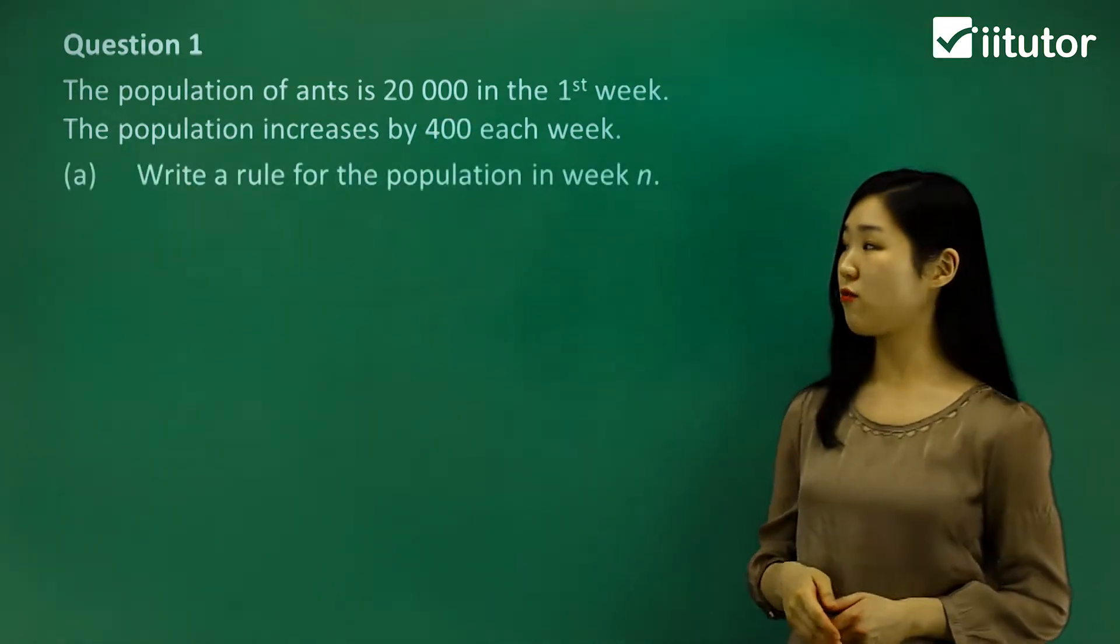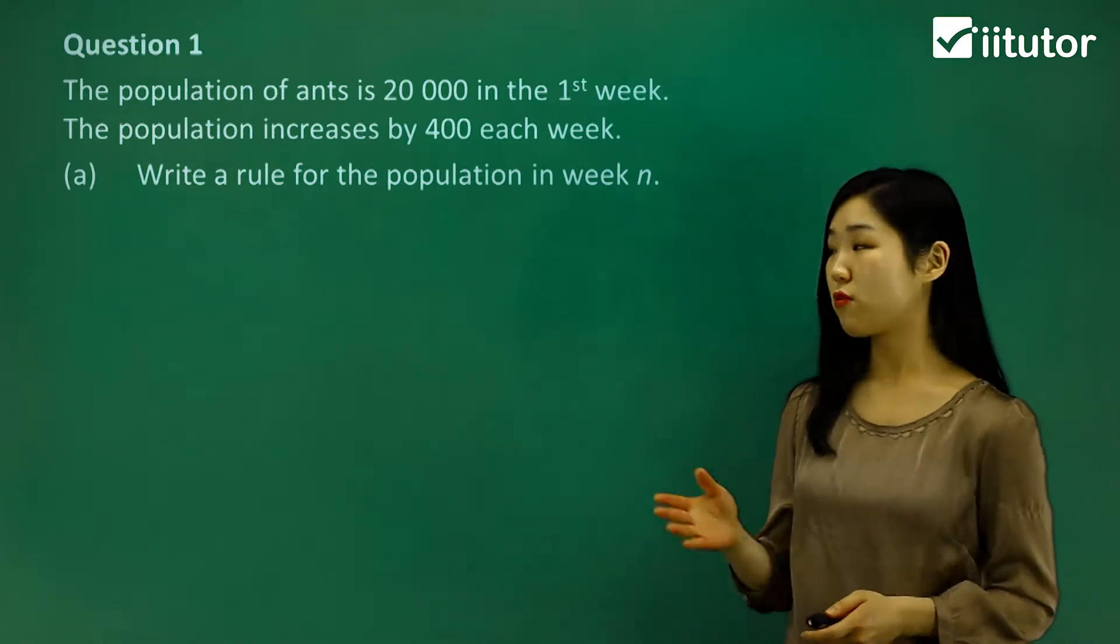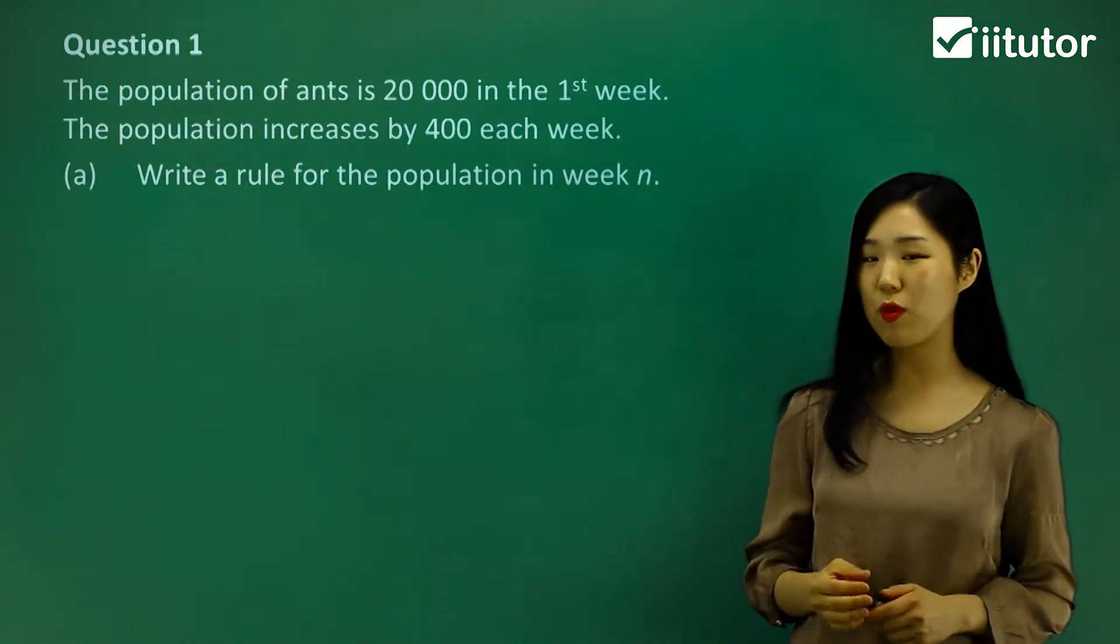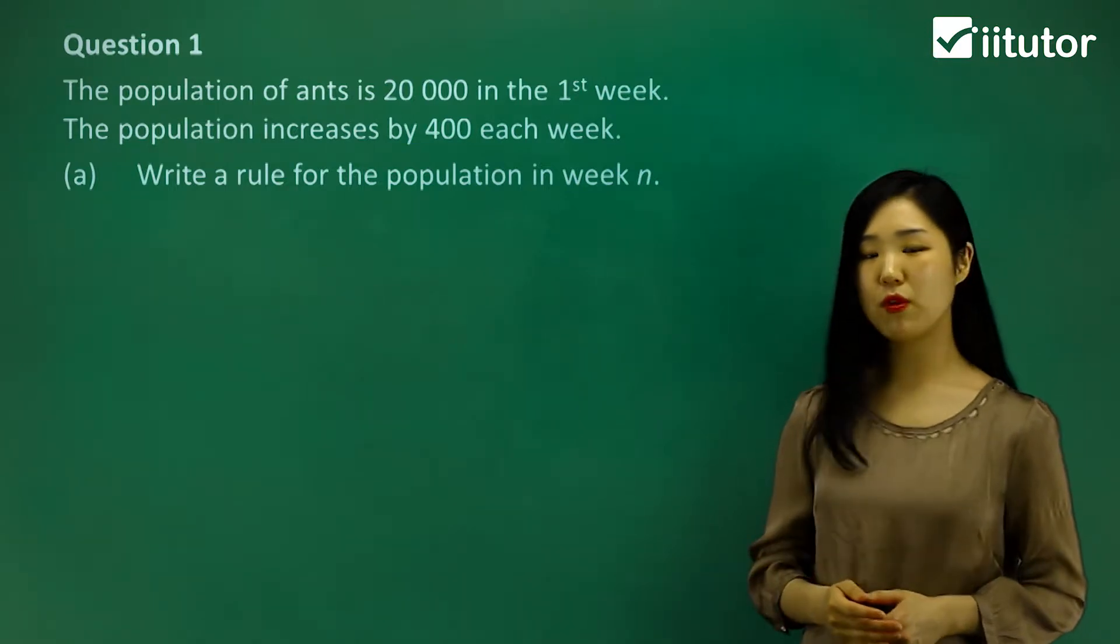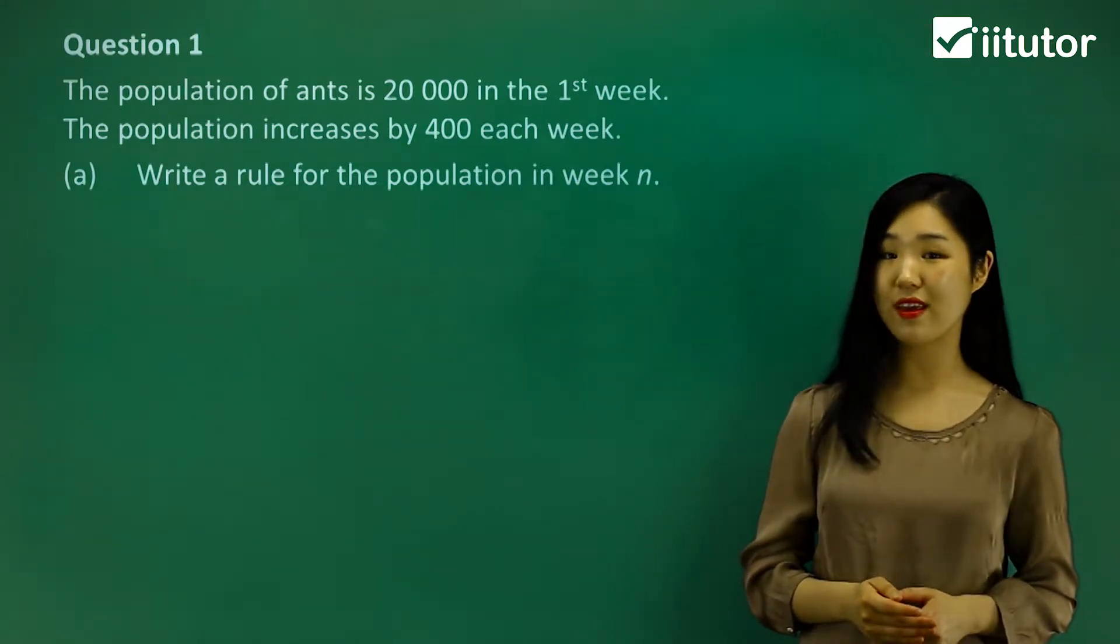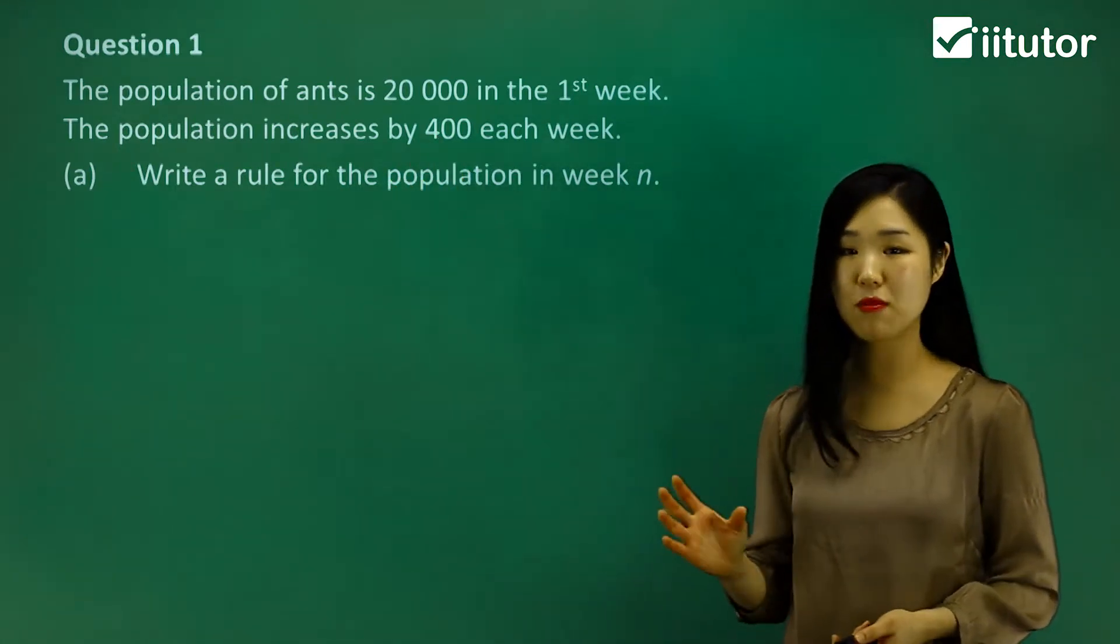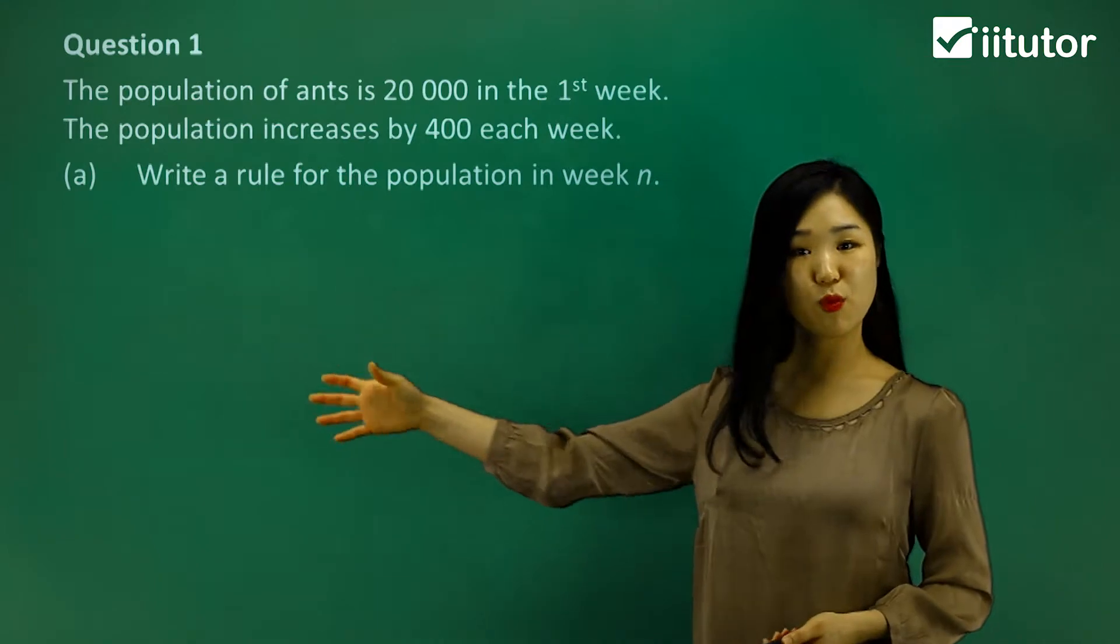Now we're going to find the rule for the population in week n. We want to keep it in terms of n using our arithmetic sequence formula. It's definitely arithmetic because it increases by the same number, 400, each week.